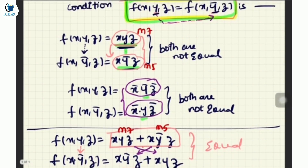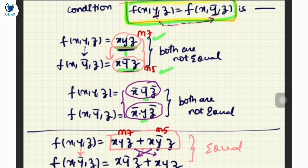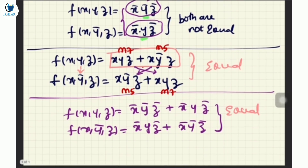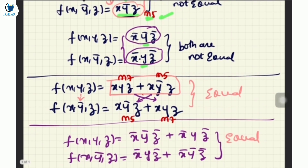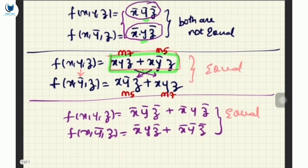If you observe here, xyz is minterm m7 (binary 111) and xy_bar·z is m5 (binary 101). Similarly, x_bar·y_bar·z_bar is m0 (binary 000) and x_bar·y·z_bar is m2 (binary 010). So m7 pairs with m5, and m0 pairs with m2. We need to find the combinations of such pairs.